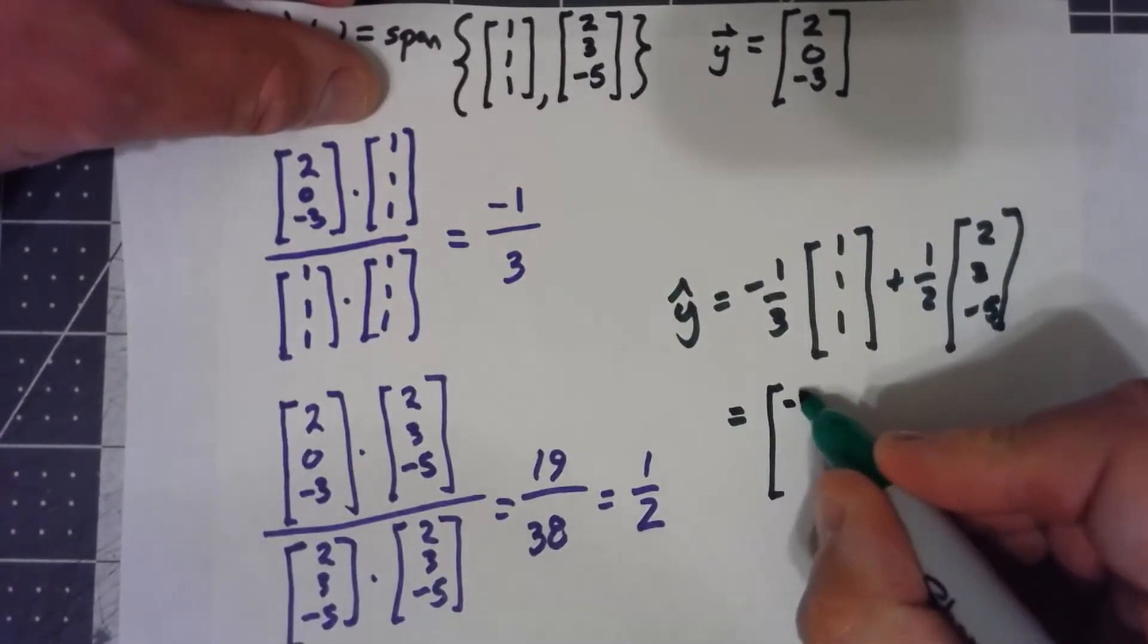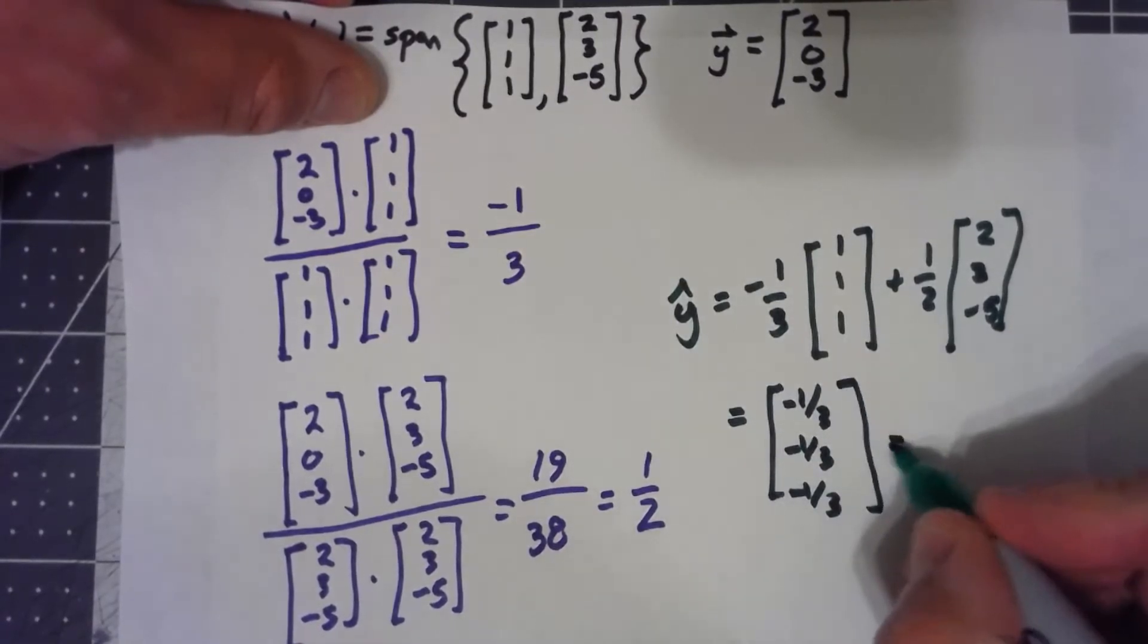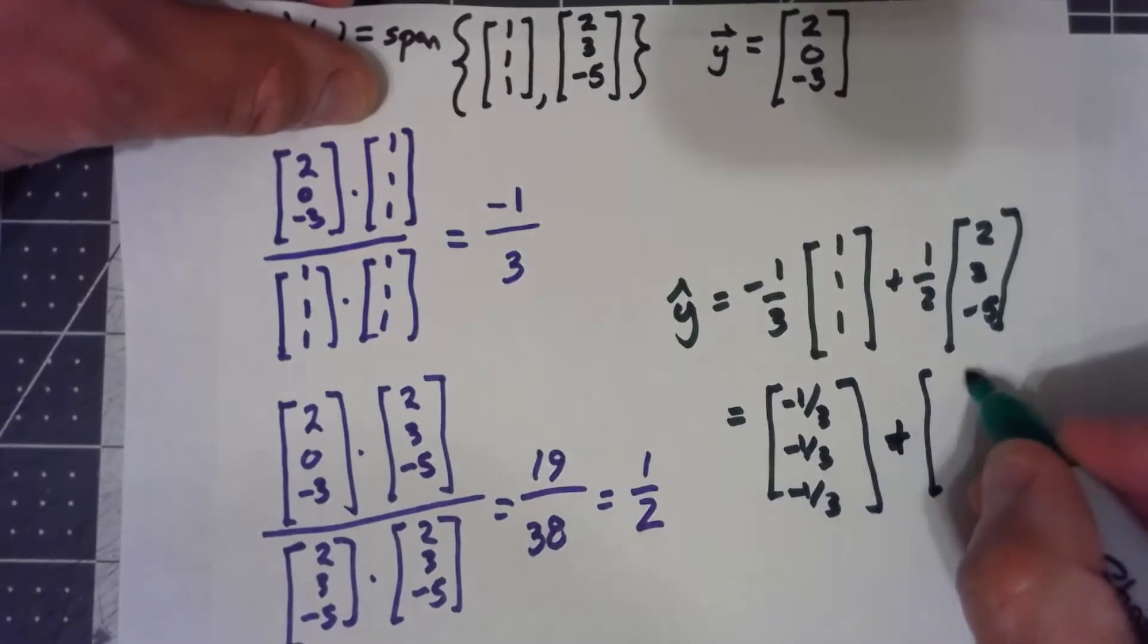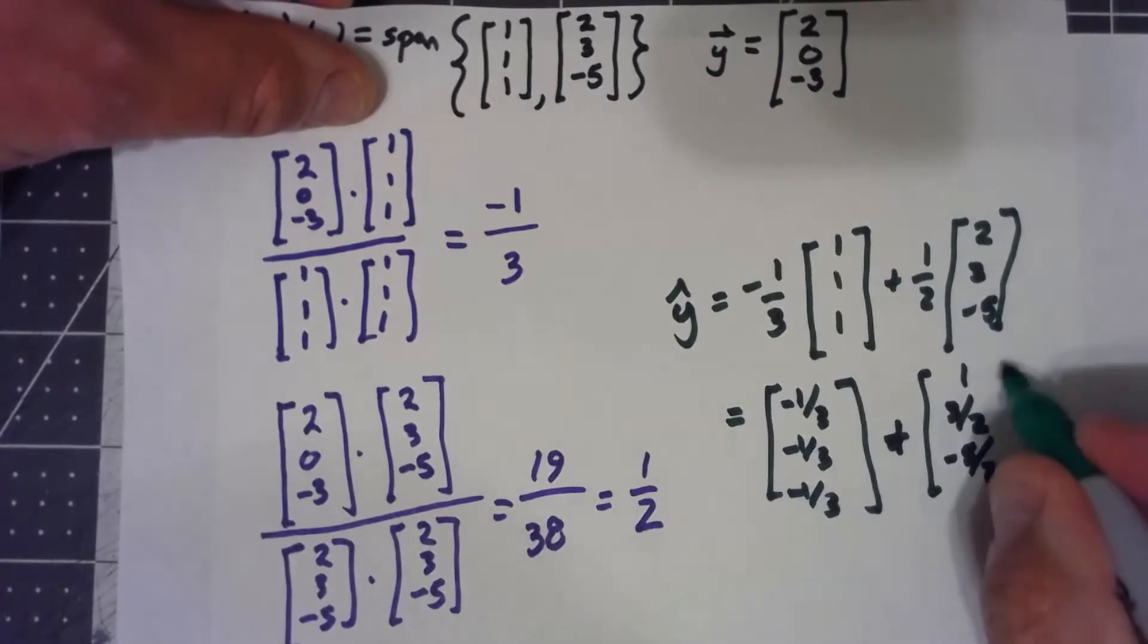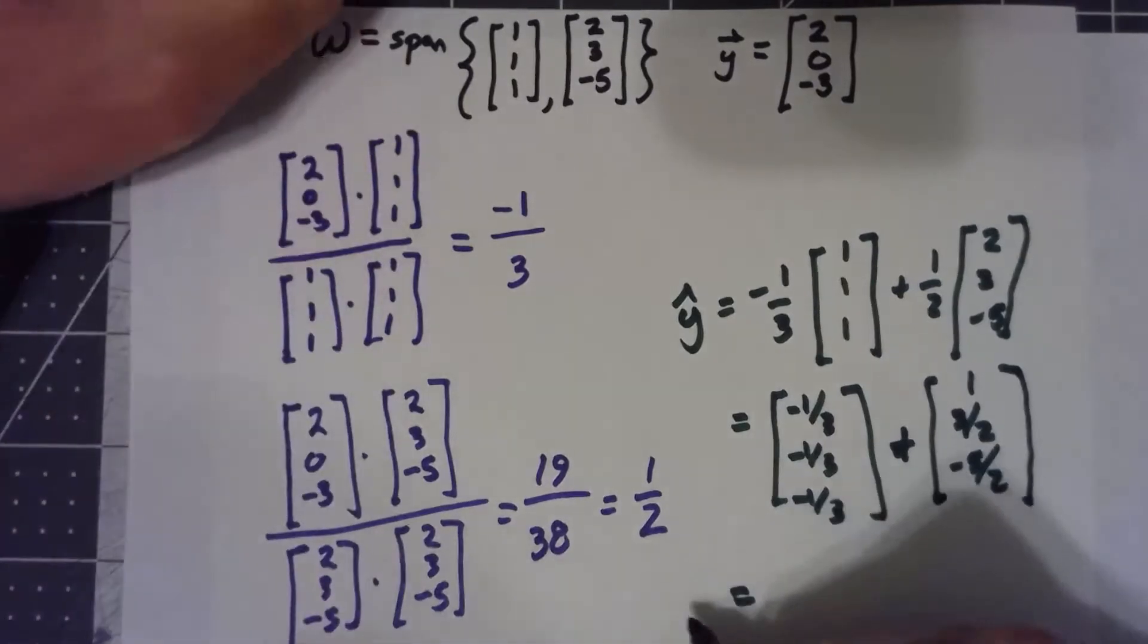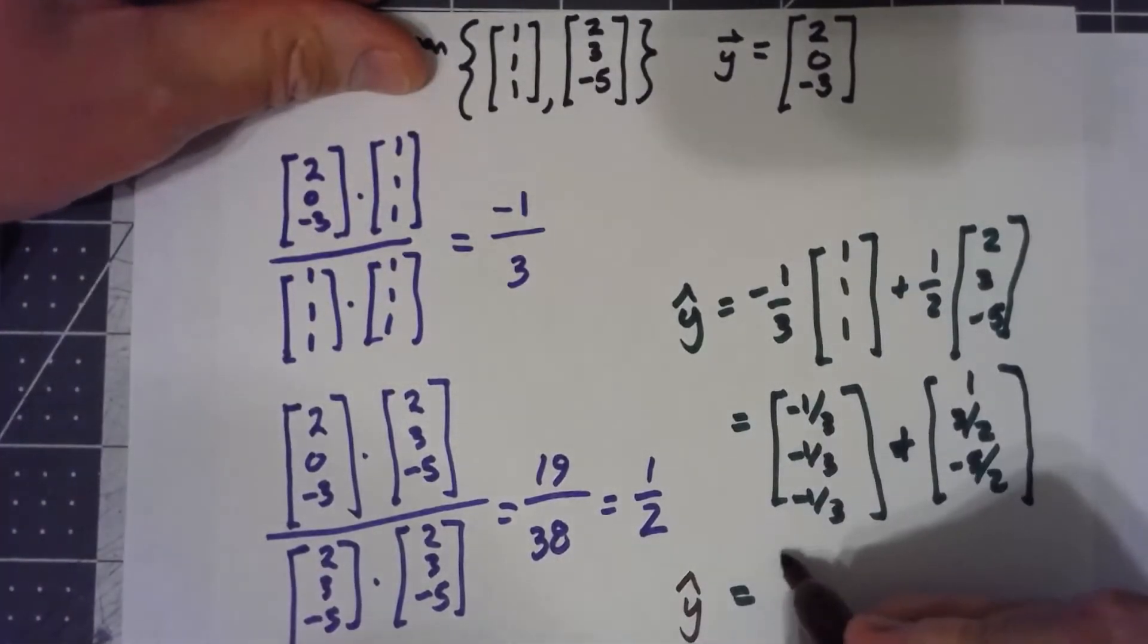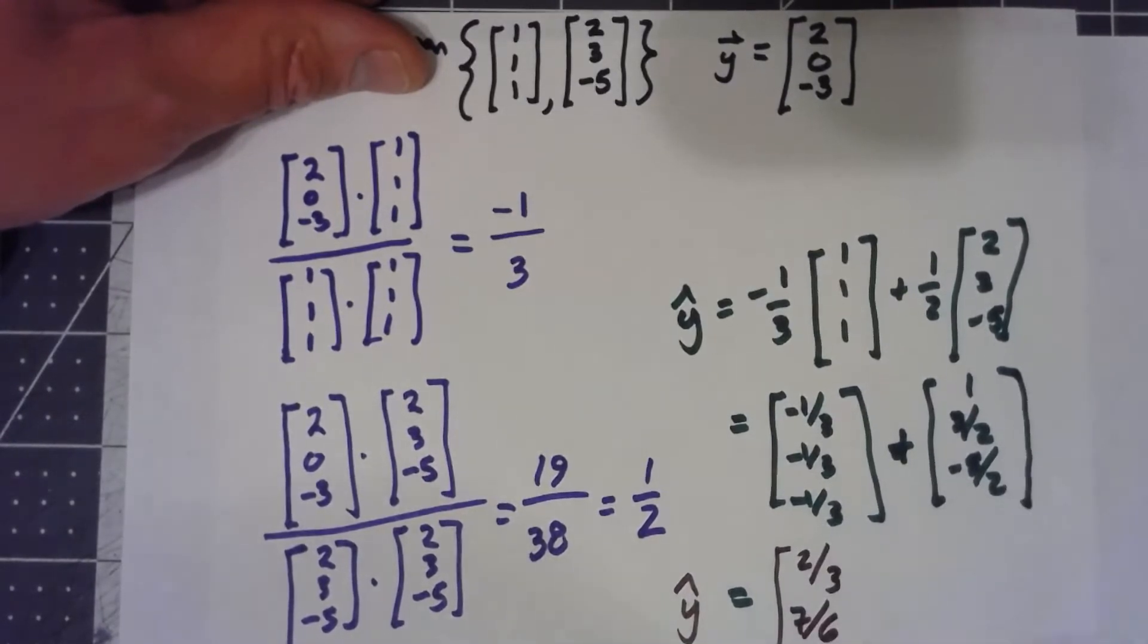So that gives me (-1/3, -1/3, -1/3), and plus (1, 3/2, -5/2). From there, it's just a little bit of fraction math, getting some common denominators. And we've got that my y-hat, -1/3 plus 3/3 is 2/3. -2/6 plus 9/6 is 7/6. -2/6 minus 15/6 is -17/6.